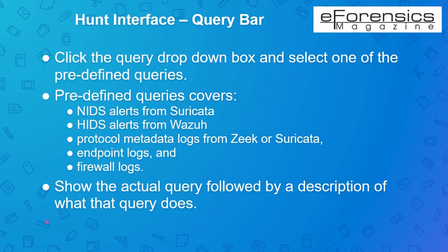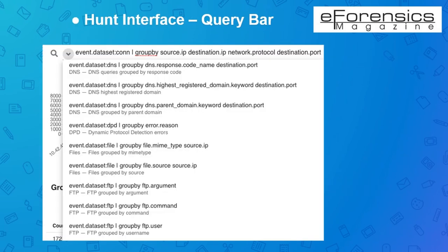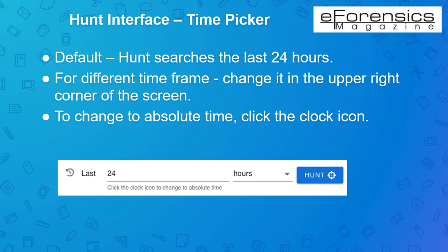You could find several entries in the drop-down list, and every entry will express the actual query followed by a short description of what that specific query does. This is one of the easiest ways for a security analyst to get started by clicking the query in the drop-down list box and selecting one of the predefined queries, which involve major data types generated in a Security Onion deployment. You can filter based on the event.dataset option. In the Hunt interface, the default time for a hunt search is 24 hours, but as a security analyst you can search different time frames such as days or minutes by changing it at the right upper corner of the Hunt interface window.